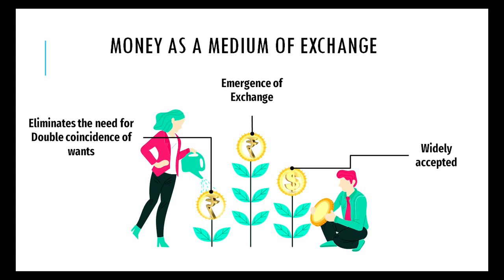Money eliminated the need for double coincidence of wants, which is also known as the barter system. Money is widely accepted — if you go to a shop and want a particular service or product, you simply give money and get what you want. Whether you want to buy or sell a product, money facilitates that transaction as a widely accepted medium of exchange.